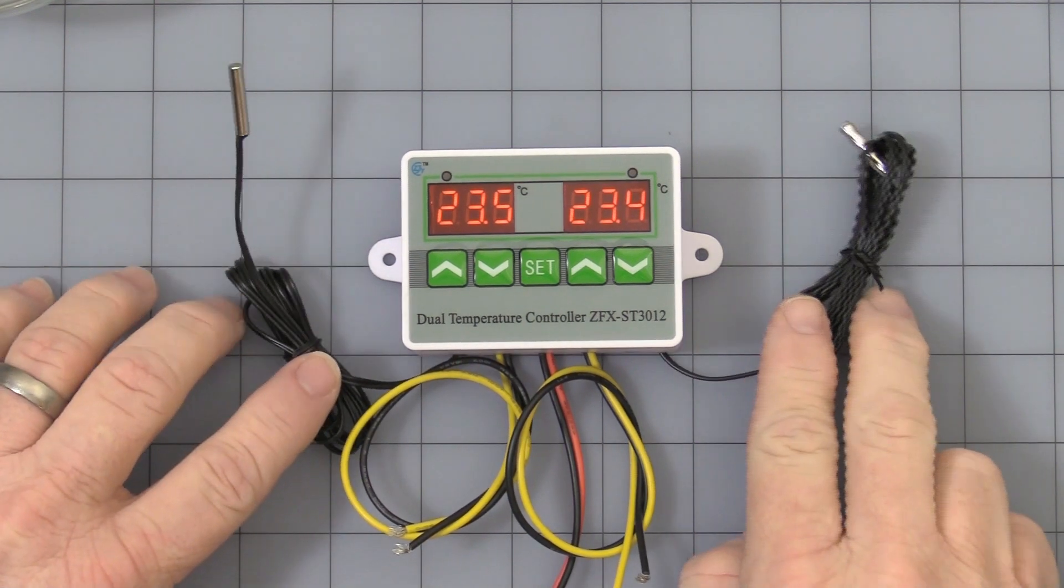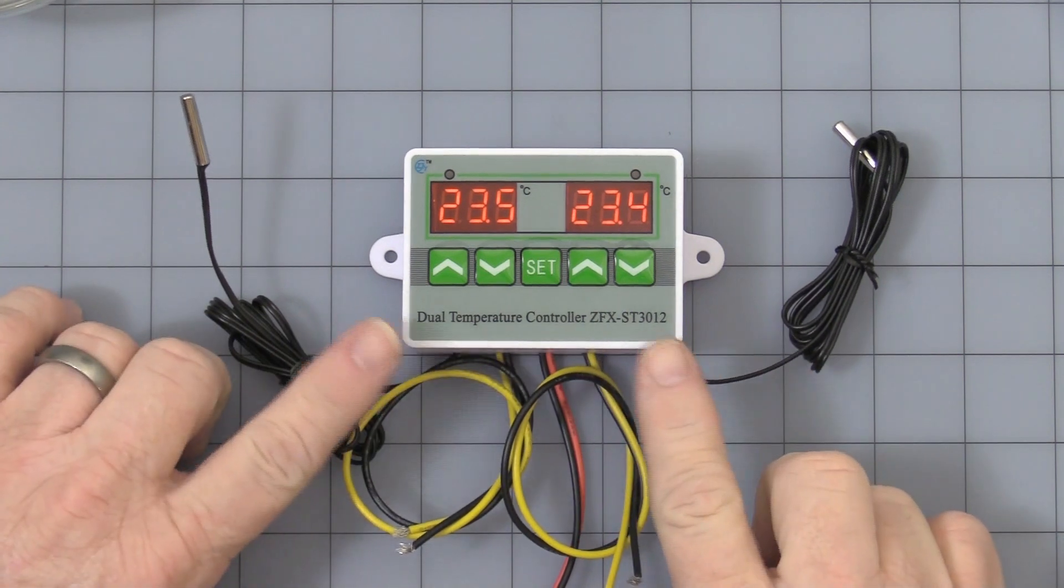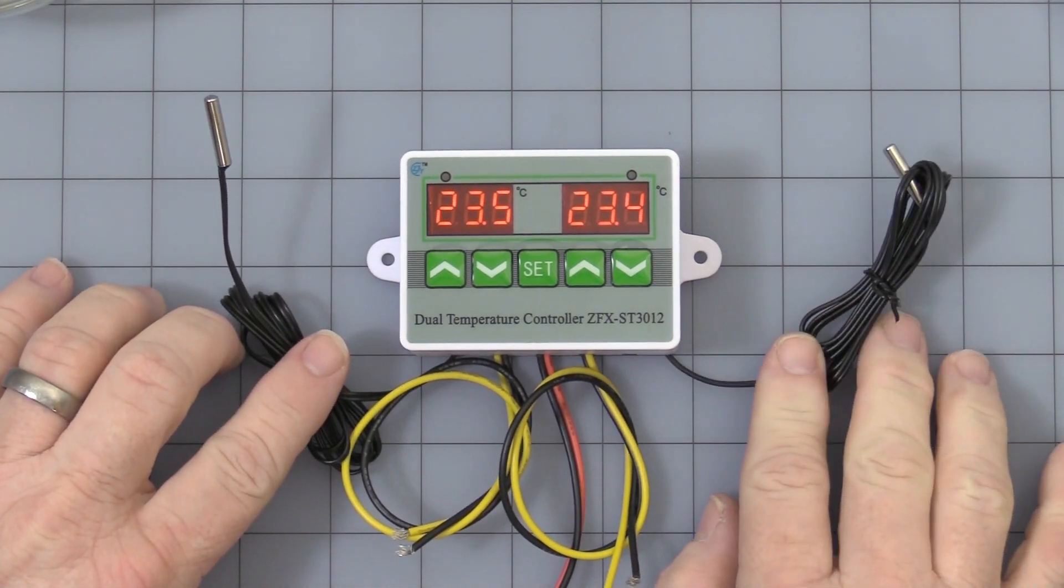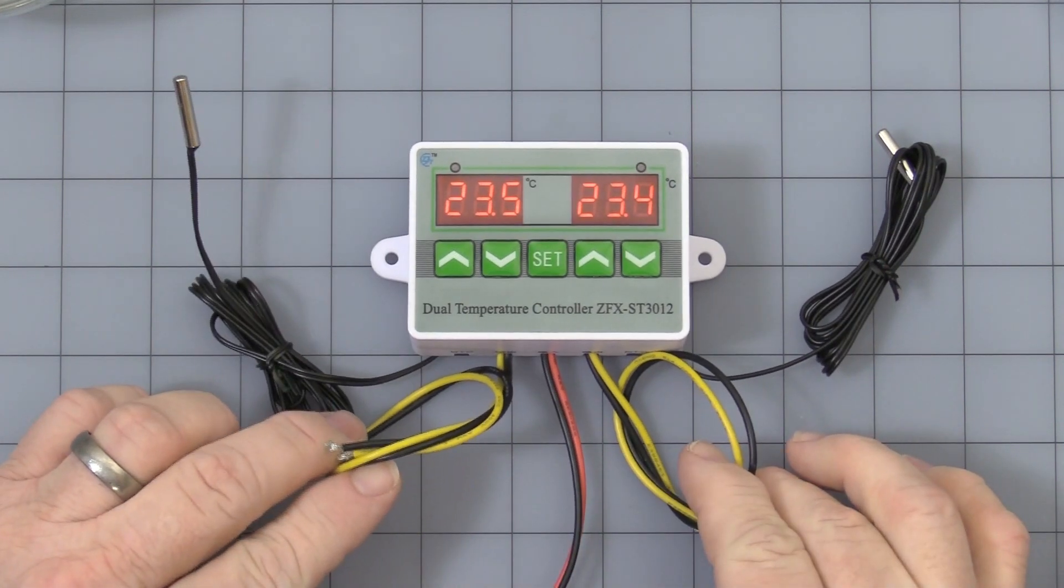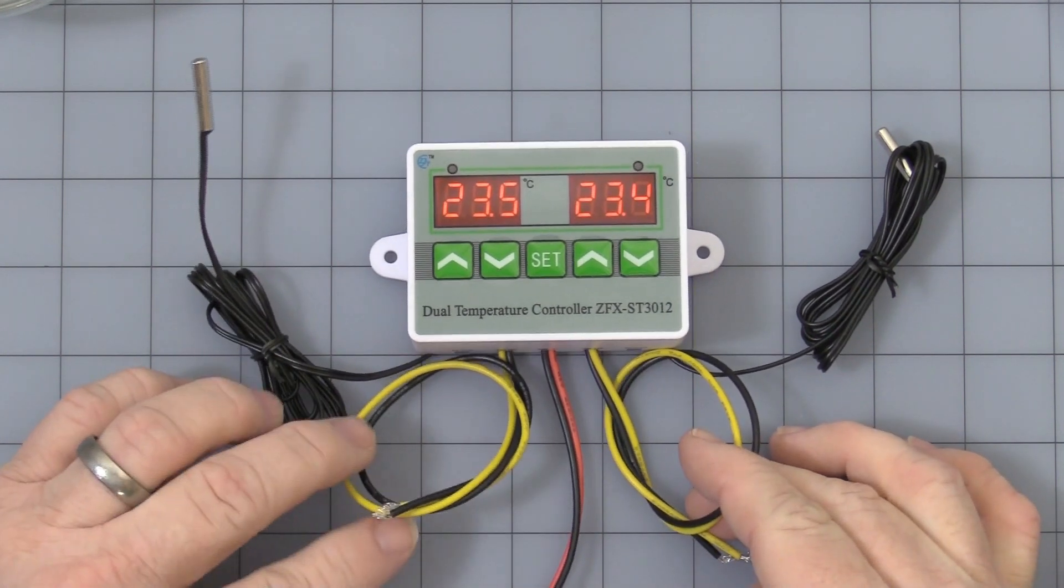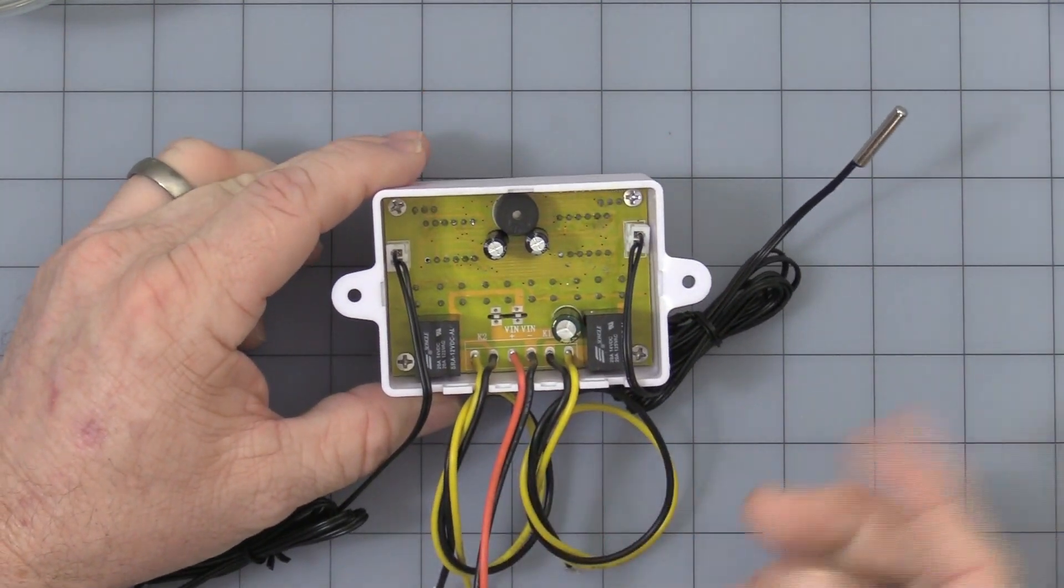You have two independent probes to monitor the temperature on each side as you can see, about 1 meter long length of wire. Each one has their own single pole, single throw outputs. I've took the back off to give you a quick look because each one has their own independent relay. They are isolated.